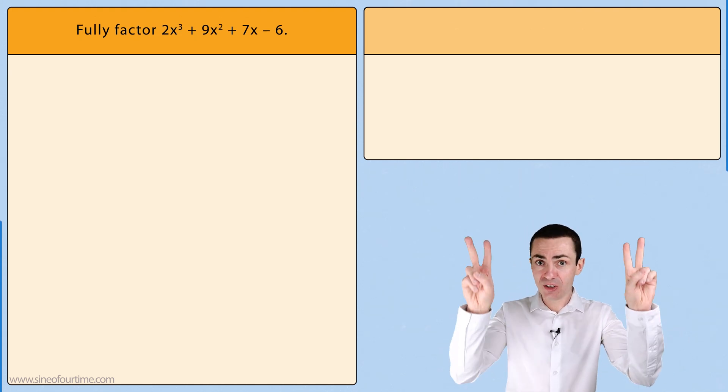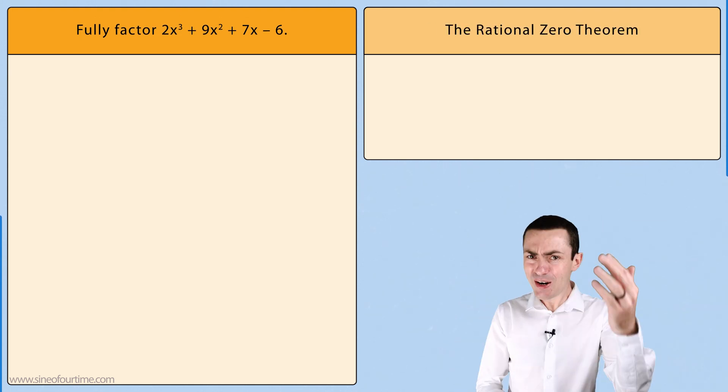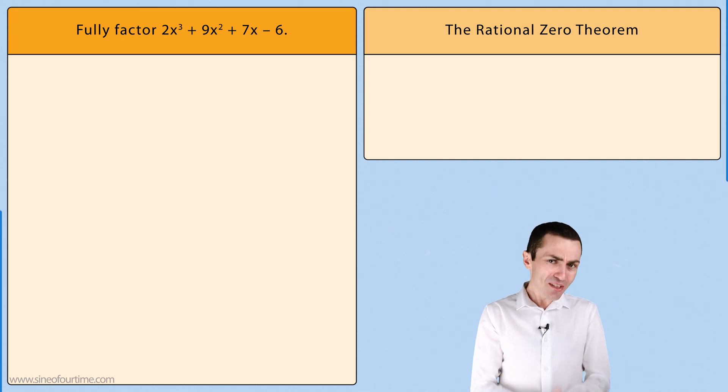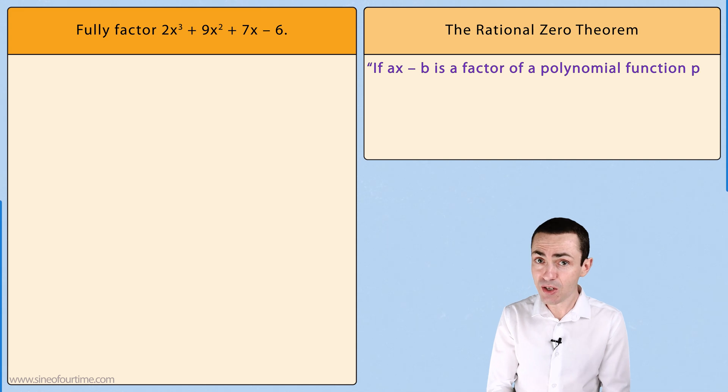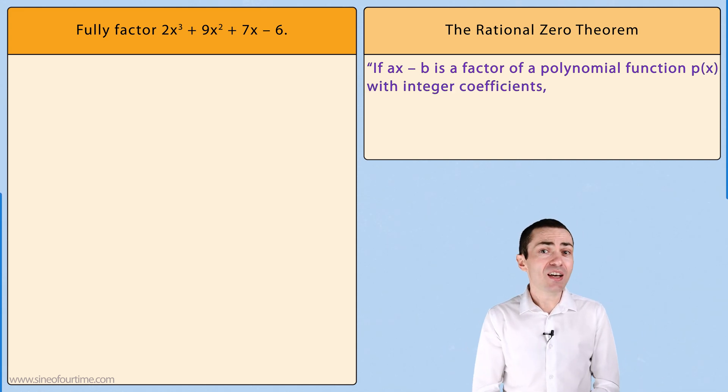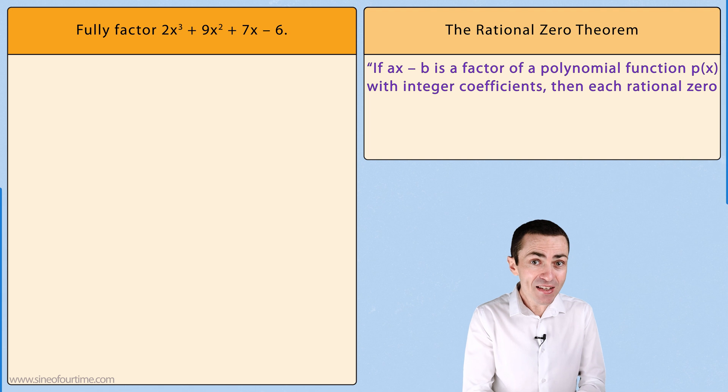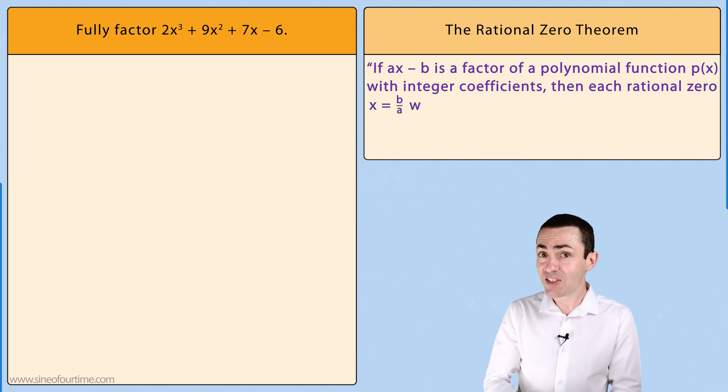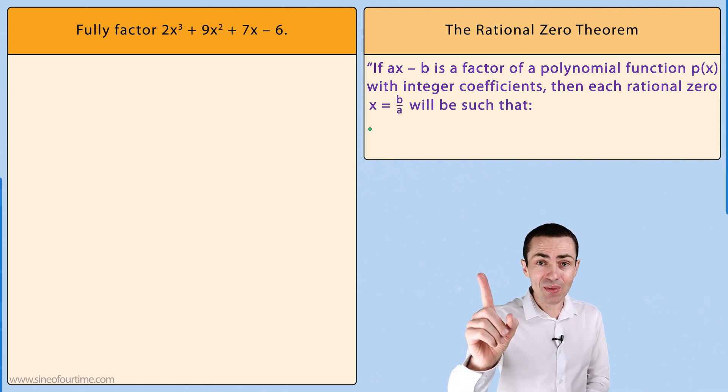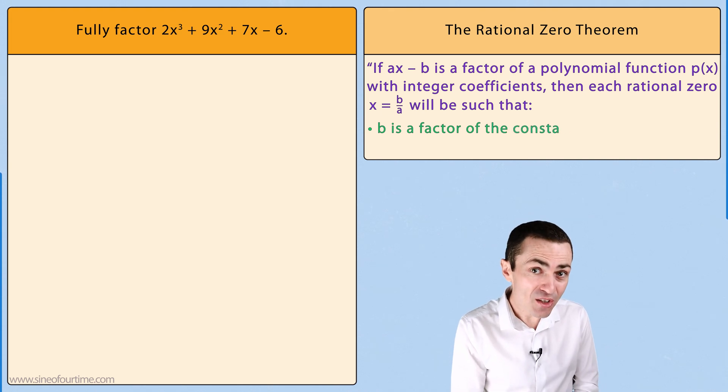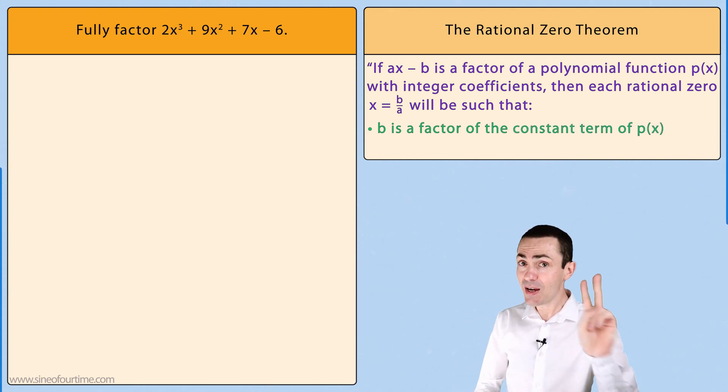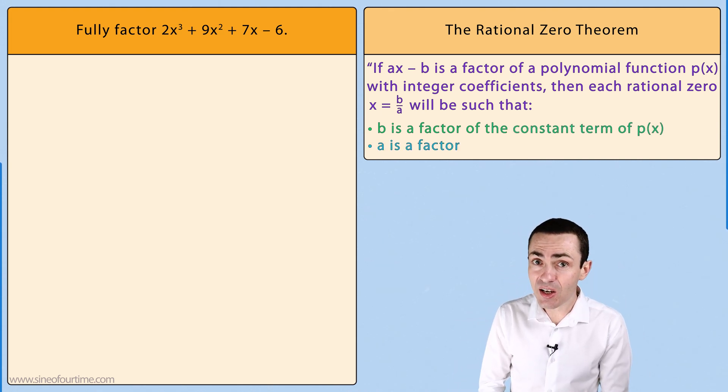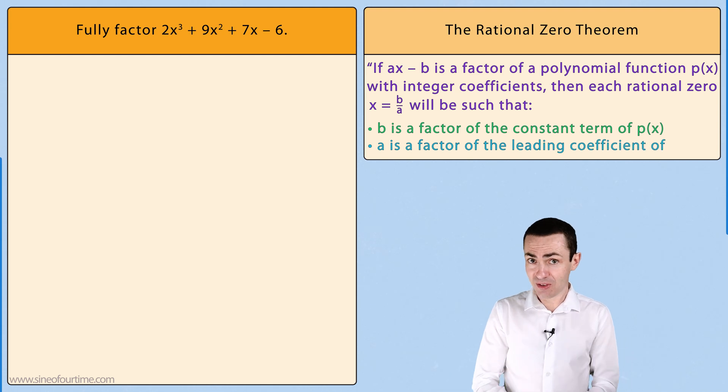and this is the rational zero theorem. The rational zero theorem states that if ax - b is a factor of a polynomial function p(x) with integer coefficients, then each rational zero x = b/a will be such that: b is a factor of the constant term of p(x) and a is a factor of the leading coefficient of p(x).